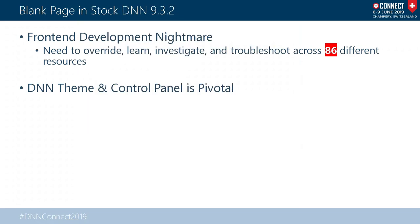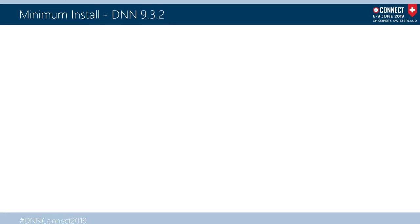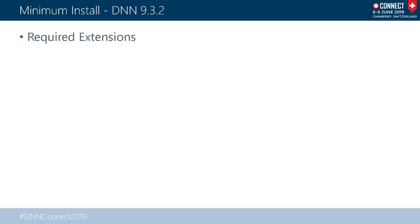What's clear is if you really want to clean things up, you've got to clean the theme up and you've got to clean the control panel up. So one thing you want to do is start with a minimum DNN install. Does anybody know what you can take out of DNN without breaking it? Like all the modules and stuff.